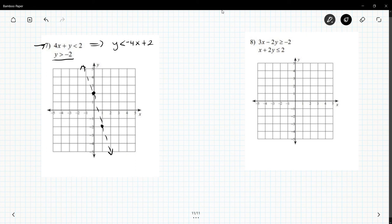And then y is greater than negative two. So that is a dashed line that goes through negative two that is horizontal. So I already know I'm going to be shading above because zero is greater than negative two.